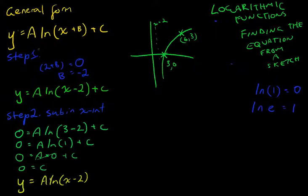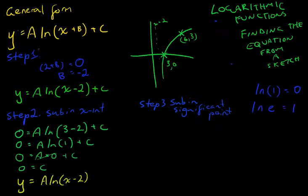Now the final step is to find your A here, and you can do that by subbing in the significant point. So step three, sub in significant point. Okay, now when I do that, our significant point is 6,3.